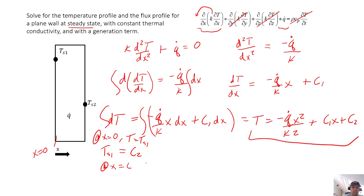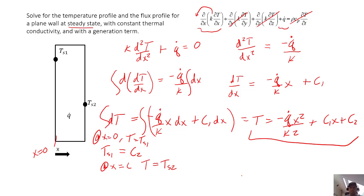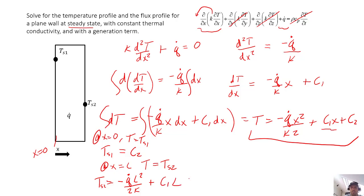Now let's look at the other boundary condition. At x equals L, T equals Ts2. Substituting L for x and Ts2 for T, we get Ts2 equals minus q-dot times L squared over 2k, plus C1 times L, plus C2. Since we already know C2 equals Ts1, we can substitute that in and forget about C2. Now we have one equation and one unknown — we just need to solve for C1 under these conditions.